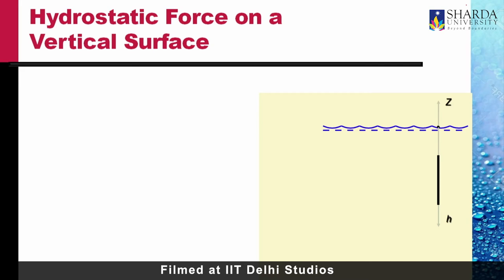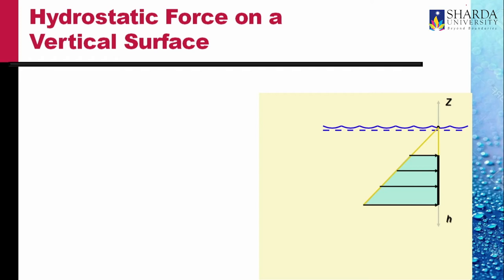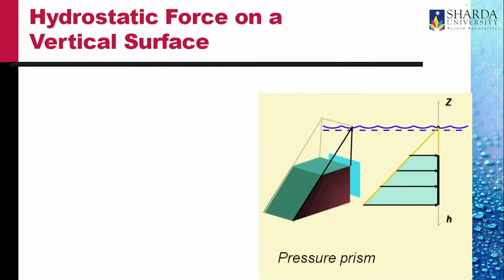Let us consider the hydrostatic force on a vertical surface. We have seen earlier that within a liquid, the force varies linearly with the depth of the point. So the pressure on this plate shown in red is as shown. If we consider the width of the plate, there would be a pressure prism on that surface. The magnitude of the force on the upper surface would be rho g h1, where h1 is the depth of the upper surface from the free surface of water, and the pressure at the lowest end of this plate would be rho g h2.